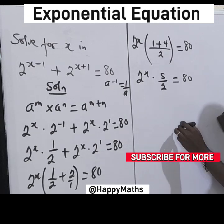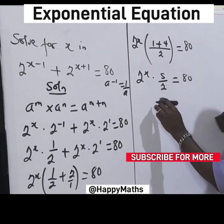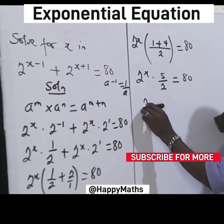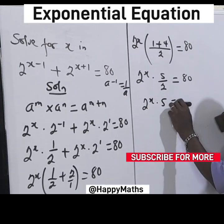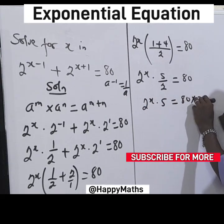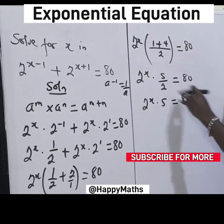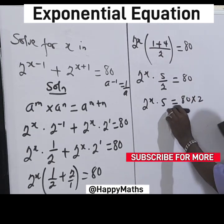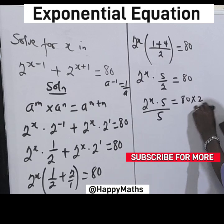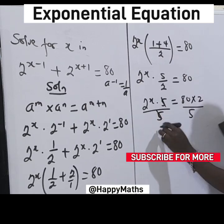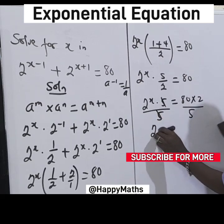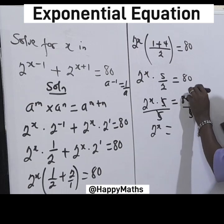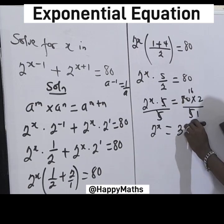Now let's quickly cross-multiply. This gives us 2 raised by s times 5 equal to 80 times 2. Using this 2 to multiply, then divide both sides by 5 — so 5 and 5 cancel — giving 2 raised by s equal to 16 times 2, which is 32.